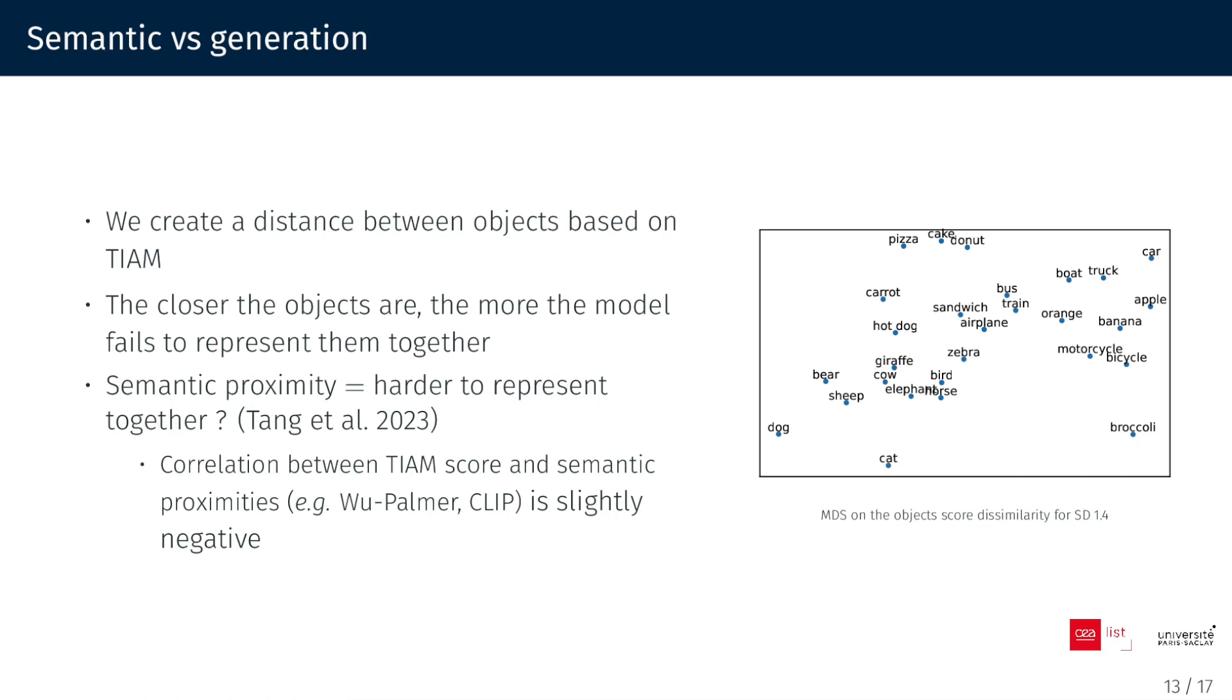We calculate correlation between semantic distance and TIAM distance, revealing a slightly negative correlation. This indicates that generating objects together becomes more challenging as their semantic closeness increases. Further research is needed in this area.